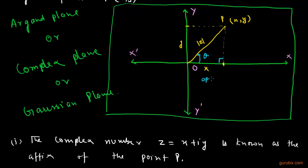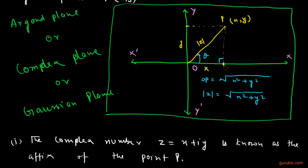Suppose we denote this acute angle as theta. The line OP is equal to the square root of x-squared plus y-squared, or we can say mod z equals the square root of the sum of squares of the real and imaginary parts. Suppose point M is the foot of the perpendicular; then the ratio PM over OM equals tan theta. Therefore, y over x equals tan theta, which implies theta equals tan-inverse of y over x.